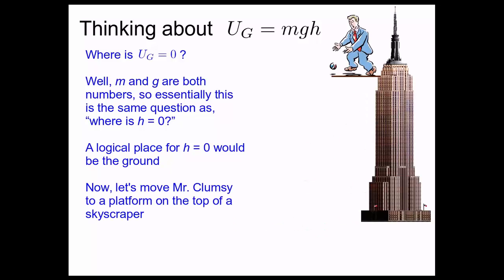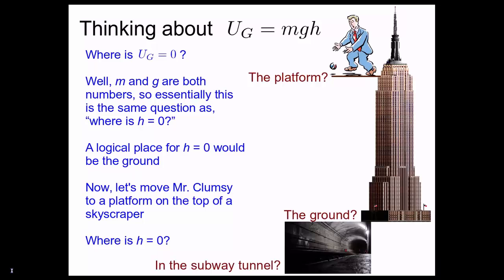Now, let's move Mr. Clumsy to a platform on the top of a skyscraper. Now, where is h equals zero? This is perhaps a little bit trickier question. Do we define h equals zero to be at the platform? Or do we define it to be at the ground? Or do we even define it to be in the subway tunnel underneath the skyscraper?